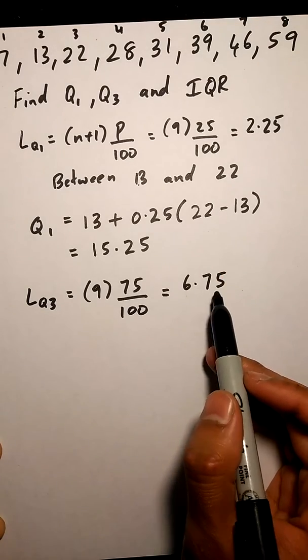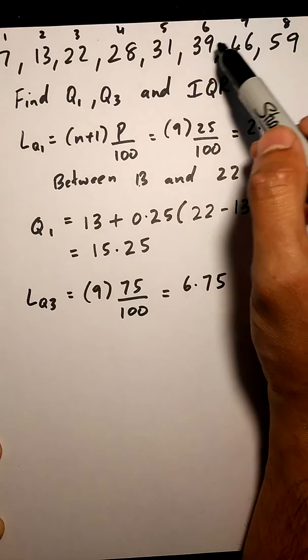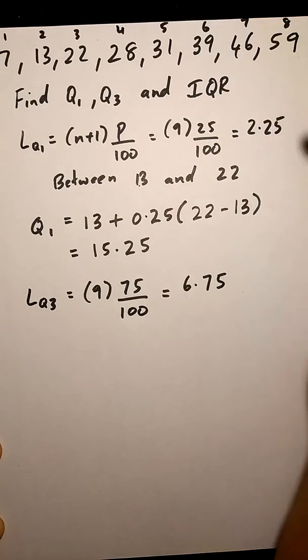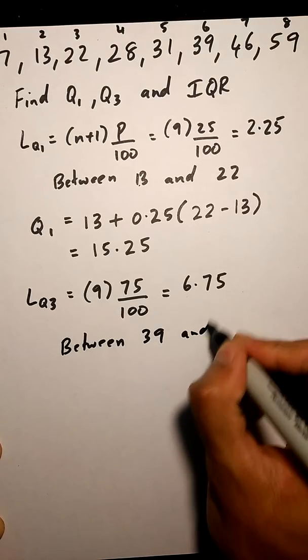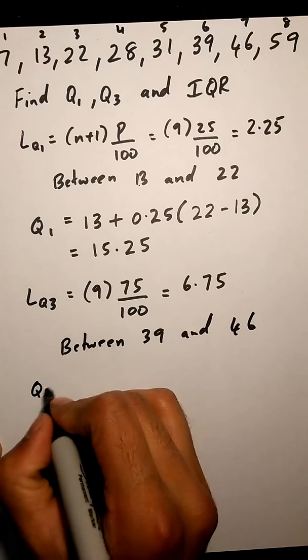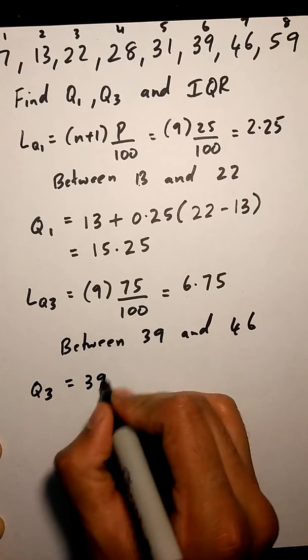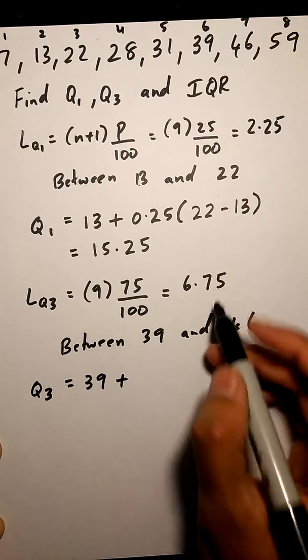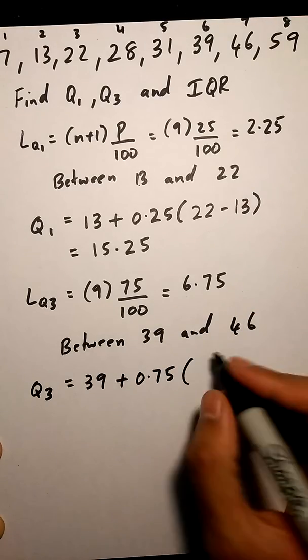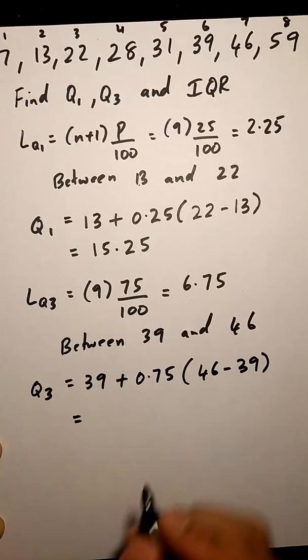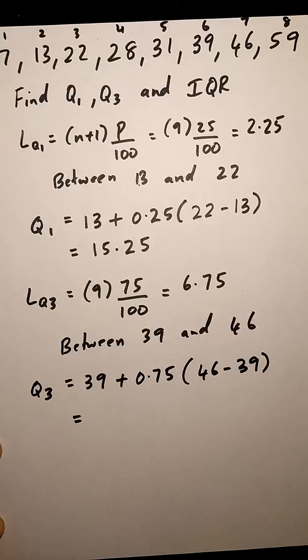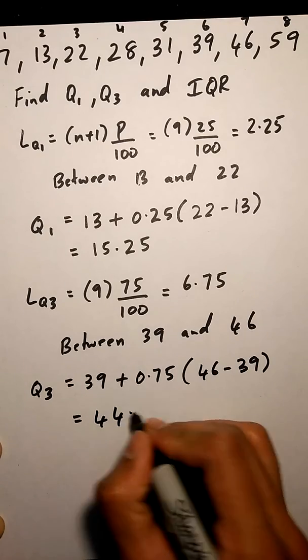So we know that 6.75 is between 6 and 7, so our solution is going to be between 39 and 46. So our Q3 is basically the lower number plus the decimal value times the higher number minus the lower number, so we get 44.25.